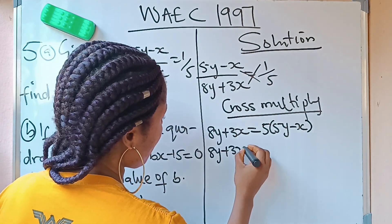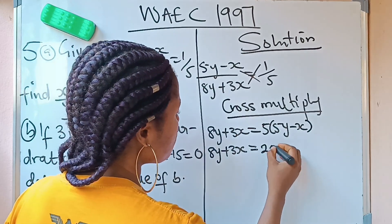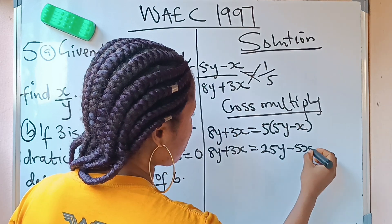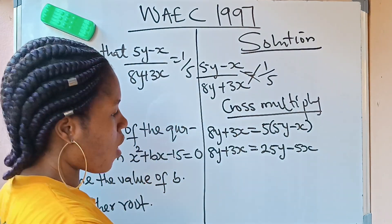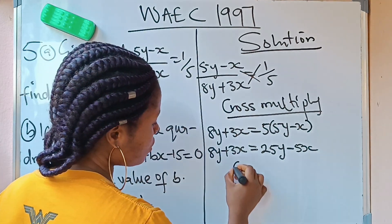5 times 5y is going to be 25y minus 5 times x is going to give us 5x. So at this point, we are going to collect our like terms.